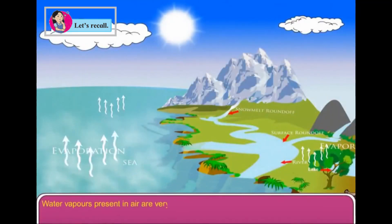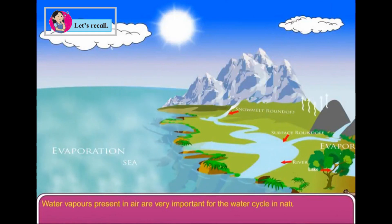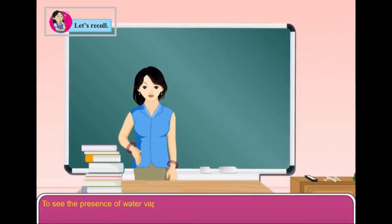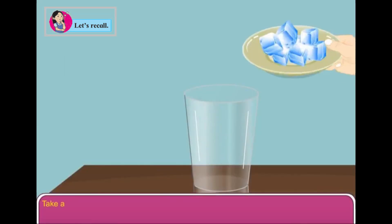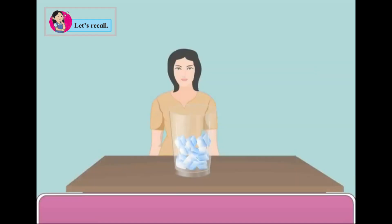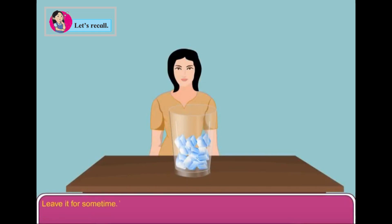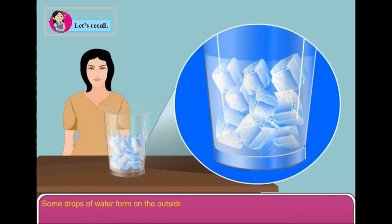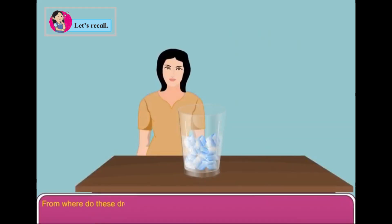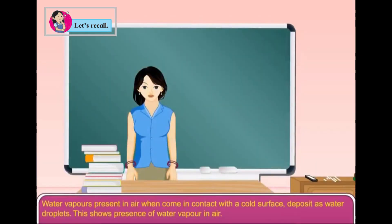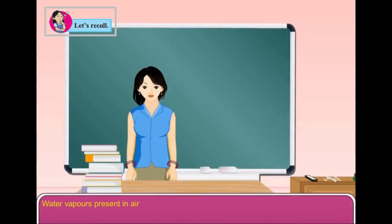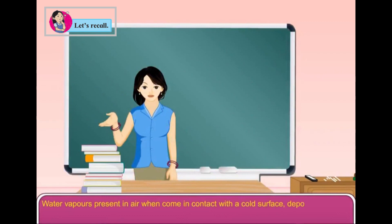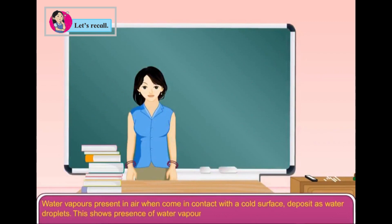Water vapours present in air are very important for the water cycle in nature. To see the presence of water vapour in air, let us perform an experiment. Take a glass and put some ice cubes in it. Leave it for some time. Some drops of water form on the outside of the glass. Water vapours present in air, when they come in contact with a cold surface, deposit as water droplets. This shows the presence of water vapour in air.